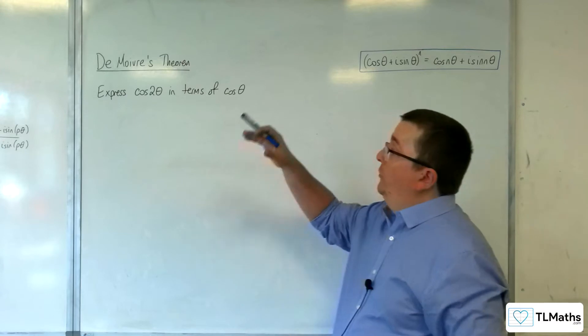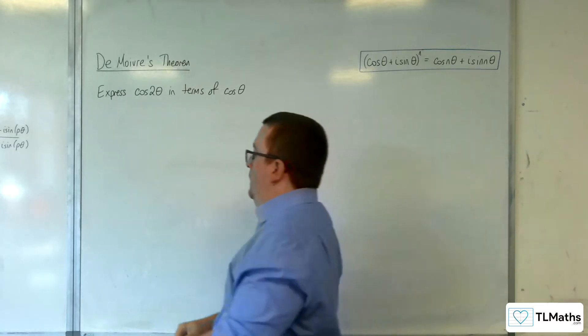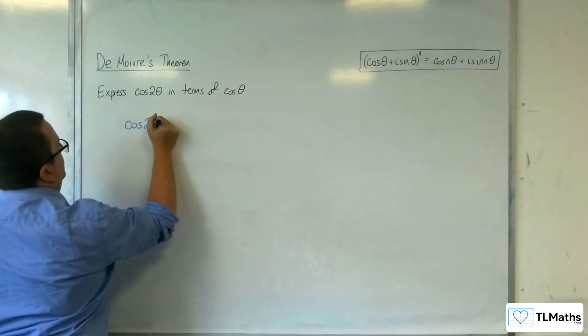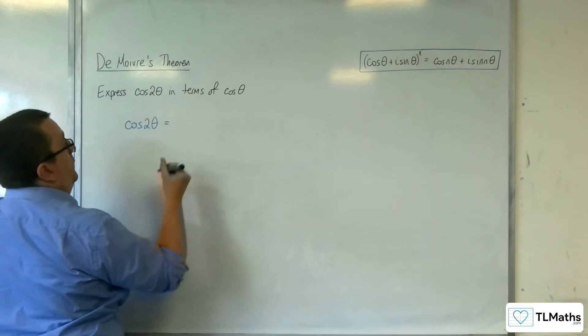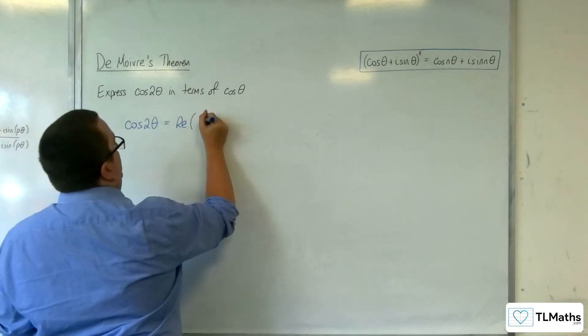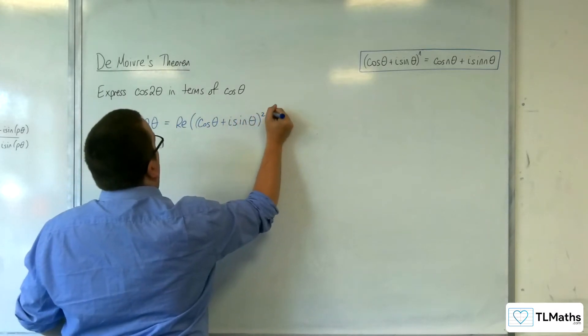Okay, so let's say I want to express cosine of 2 theta in terms of cosine theta. So cosine 2 theta is the same as the real part of cosine theta plus i sine theta squared.